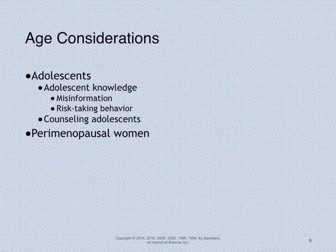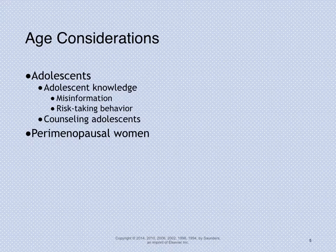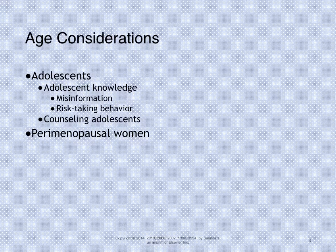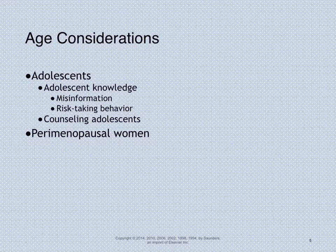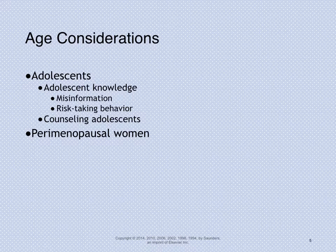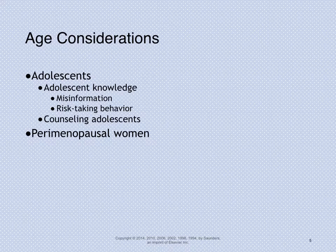Age considerations — such as adolescents. We want to explore the adolescent's knowledge of contraception, its use, and its accessibility. We want to talk about risk-taking behaviors and minimize those, talking about safe sex practices. When counseling adolescents, we want to make sure we're using information and language appropriate to their age and to the patient.